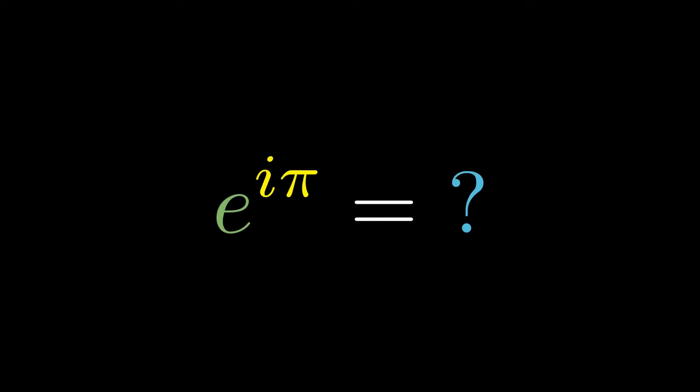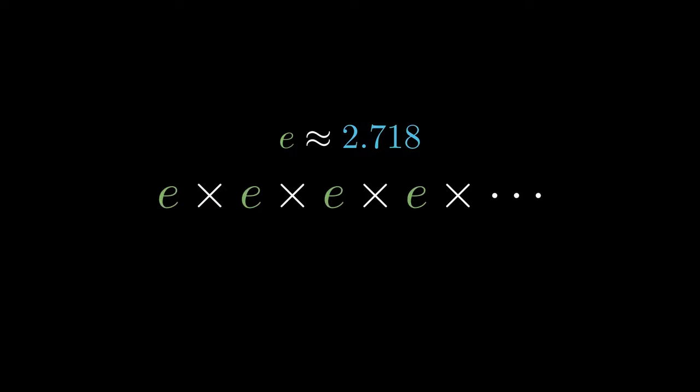This is the first of 10 equations that do not look correct, but in some contexts are. The number e is normally approximated to 2.718. When we say e to the 1, we mean the number e multiplied once, which is still approximately 2.718.